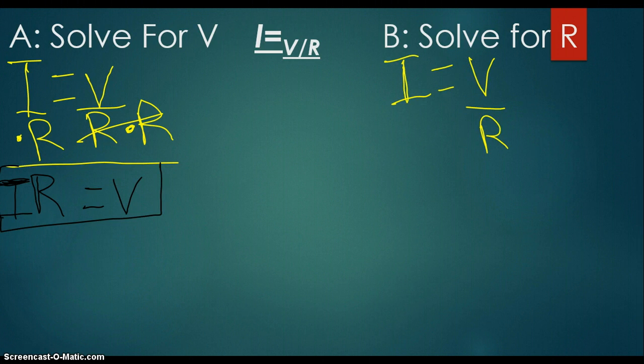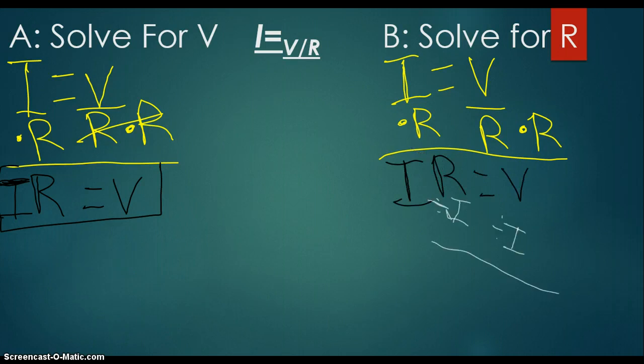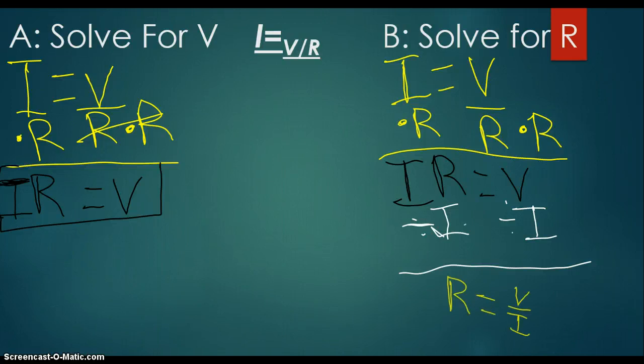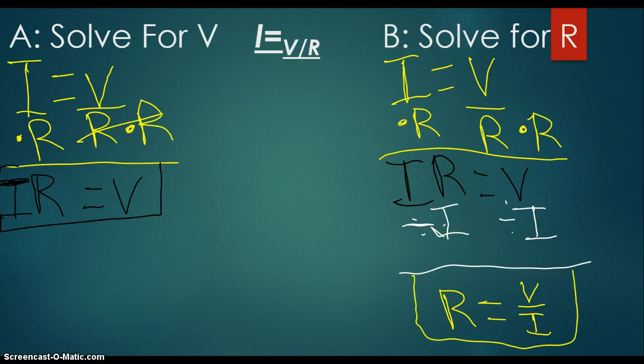The next part, this is the equation. So I would times R just like the other problem. And then I would have V alone. The next thing I would divide by I so I can get the R by itself. And I would get R=V/I. And that is my final answer.